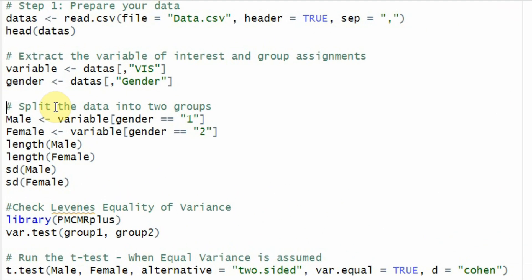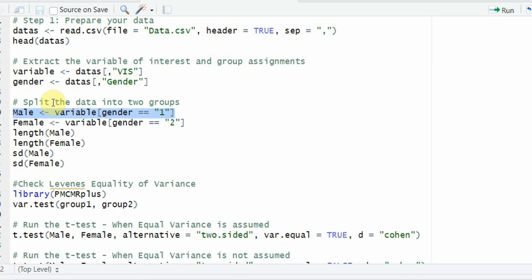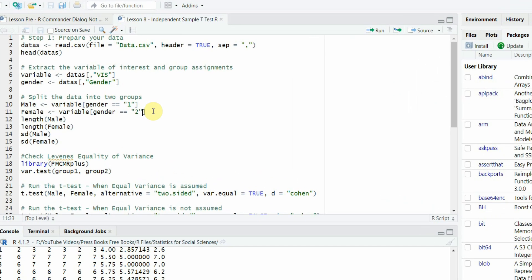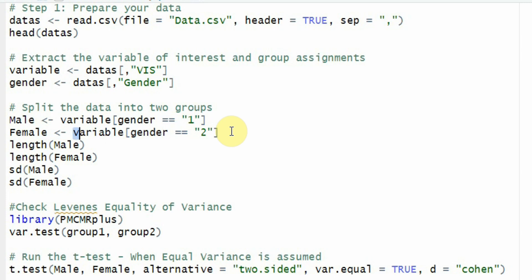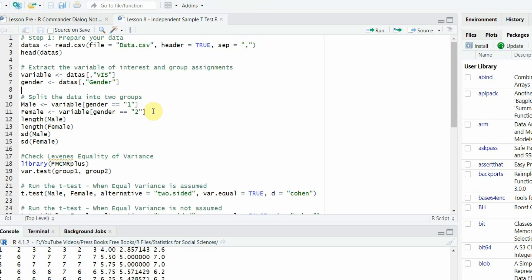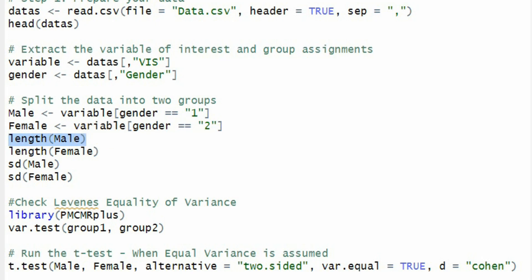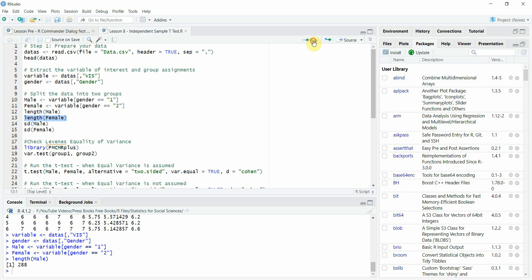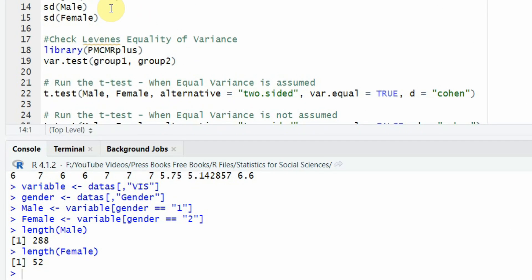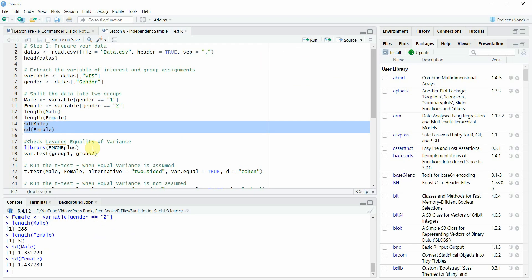Now you have to split the data into two groups. My male group will be in this object with the arrow sign. Where is my male group? It's in my variable from vision. For variable, select all where the gender is one, that is male, and put it in the male object. And for female, it is two. Square bracket gender is equal to two. I will now put it in the female for group number two. Let's see the length of male group using the length function, 288 respondents. Let's look at the female, 52 respondents. I will need my standard deviation for each group. You can just run it using standard deviation function as well.